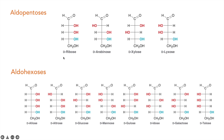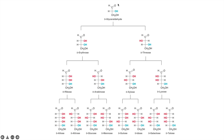For aldo-hexoses, there are four chiral carbons, giving 2^4 = 16 possible structures. The eight D-aldo-hexoses shown are D-allose, D-altrose, D-glucose, D-mannose, D-gulose, D-idose, D-galactose, and D-talose. Starting from D-glyceraldehyde, you can derive two structures — D-erythrose and D-threose — by adding one carbon with the hydroxyl on one side or the other.